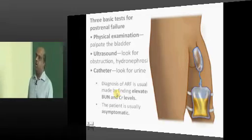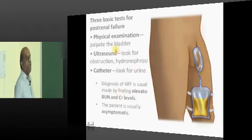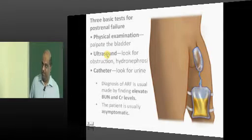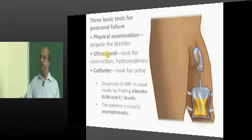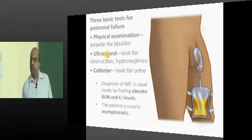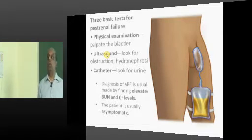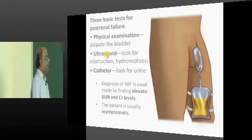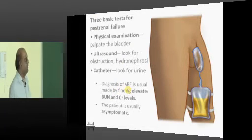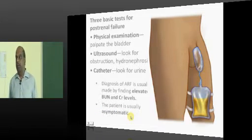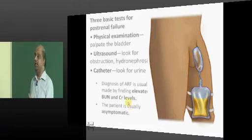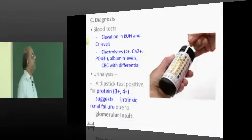Coming to the post-renal causes of acute renal failure, the most important thing to clinically examine is the bladder. We often ignore this basic examination in ARF. For example, in an elderly 75-80 year old patient with acute severe urea and creatinine elevation, if you forget to check the bladder, you miss a clue about underlying BPH. Palpate the bladder, do an ultrasound to identify hydronephrosis, and pass a catheter to see whether urine can come out. Placing a catheter is a very important part of evaluation in ARF with obstructive causes.